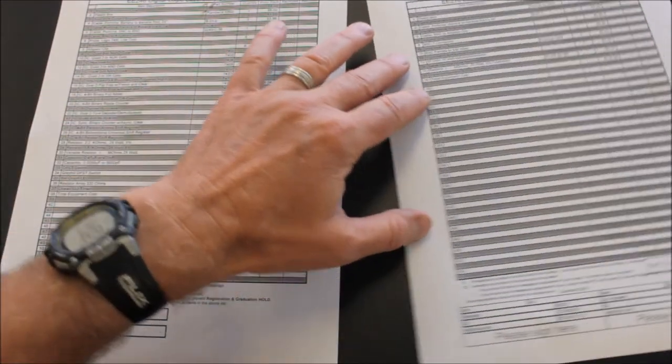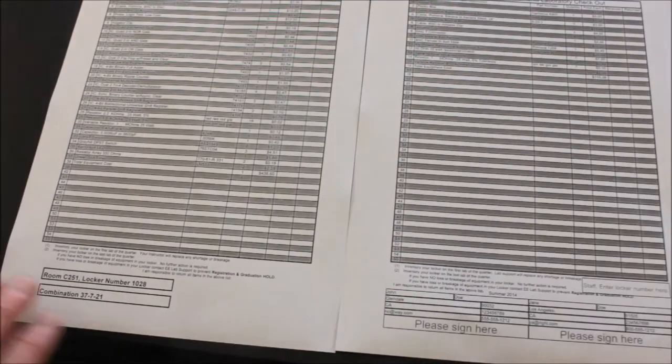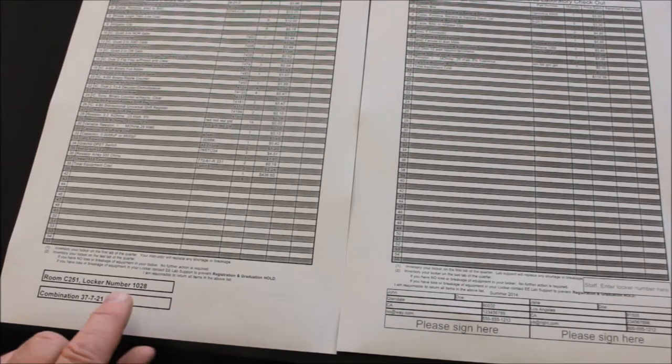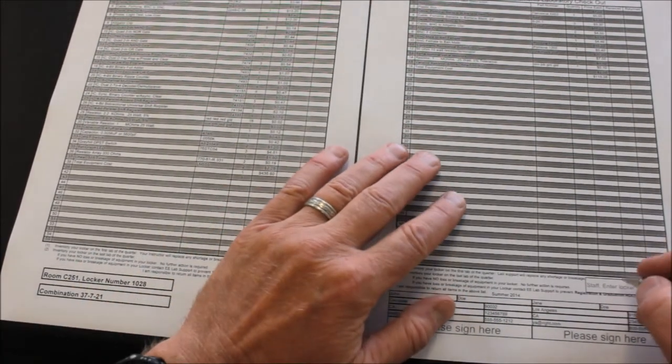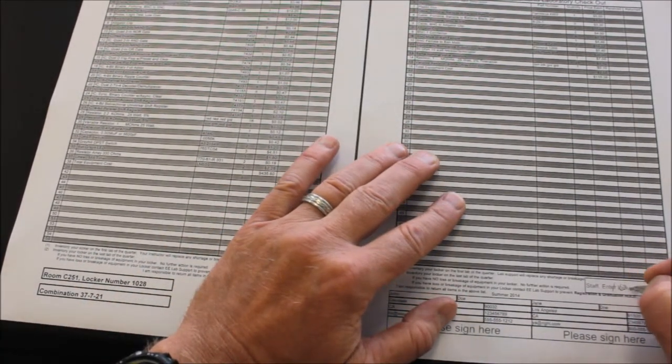After you've collected the student's form, go ahead and take your form. Take the locker number, 1028, and put it on the student form right here, 1028.